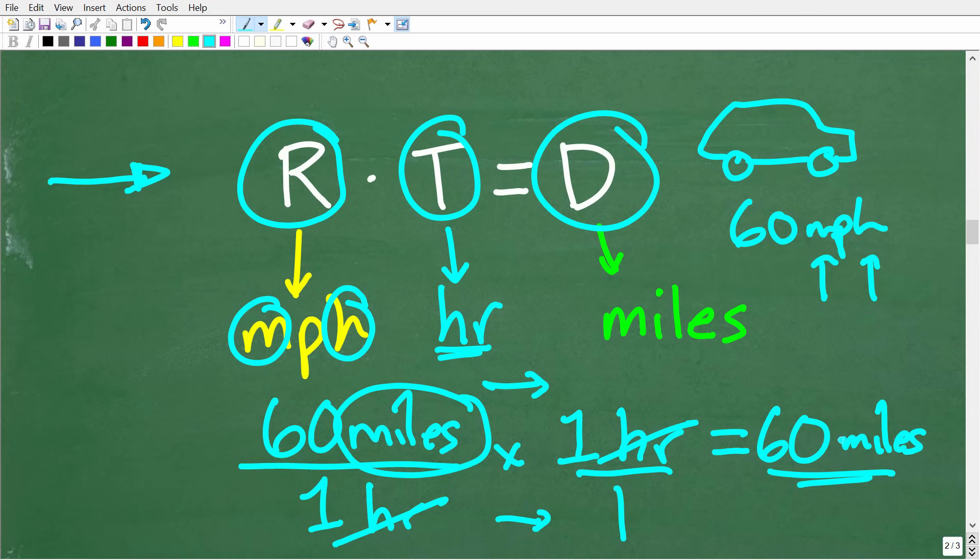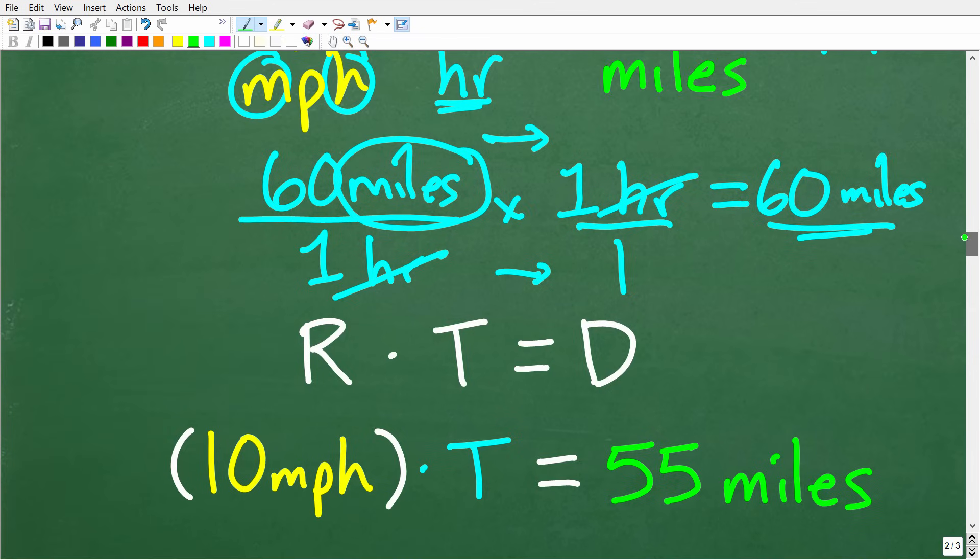Okay, so this is a critically important formula in algebra because a lot of word problems involve motion. So, again, rate times time is equal to distance. Now, although this particular problem is pretty easy to figure out, certainly we could have more complicated problems where you definitely need to understand this formula. All right, so let's put this formula to work to solve this problem.